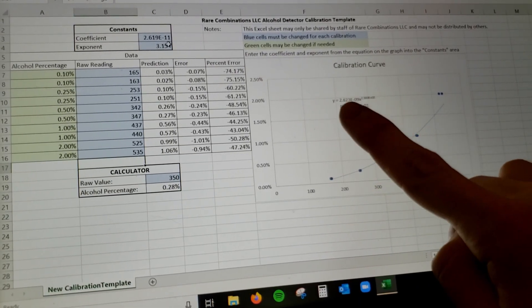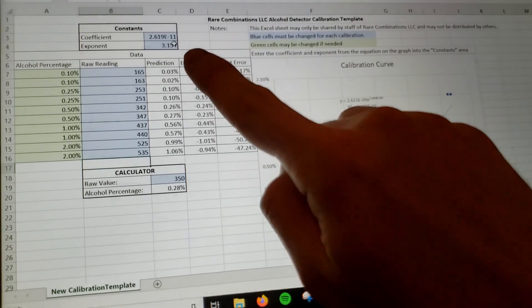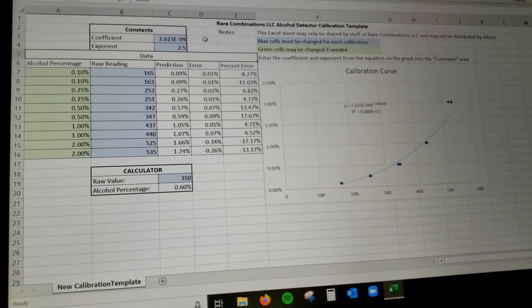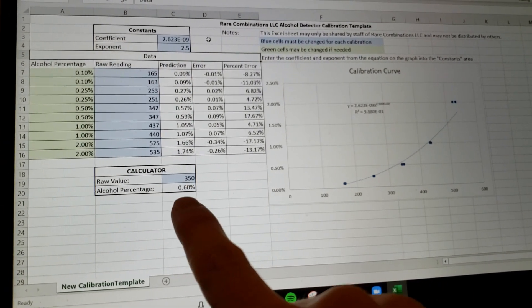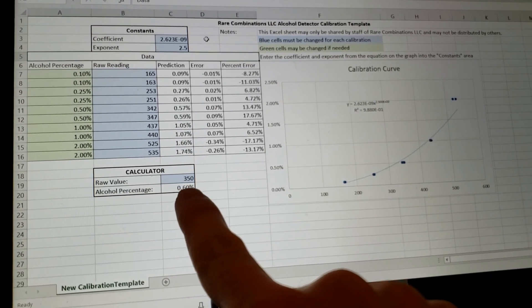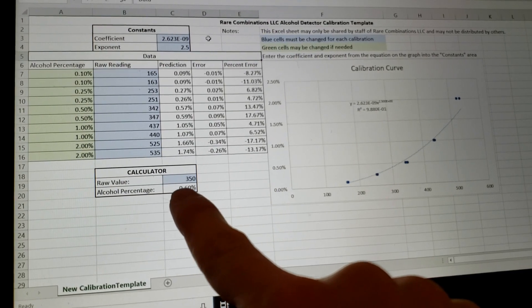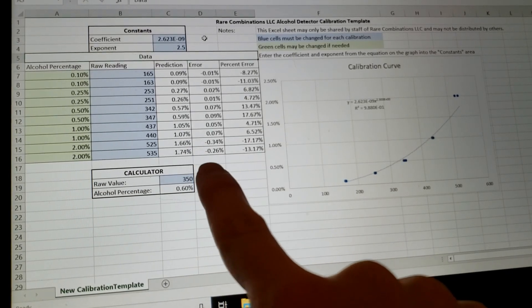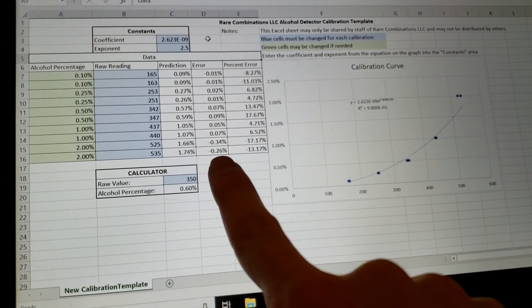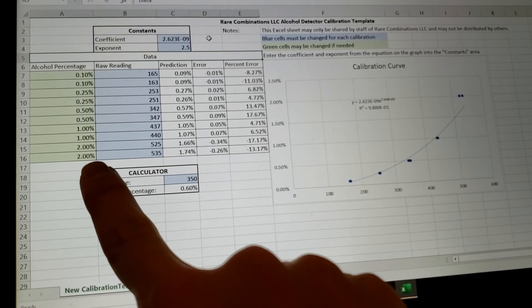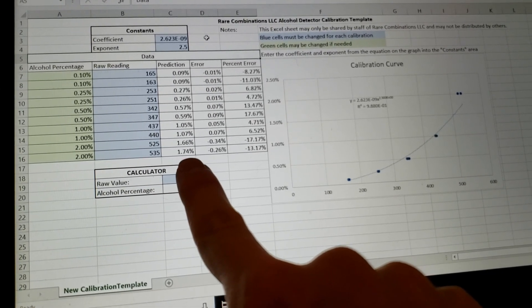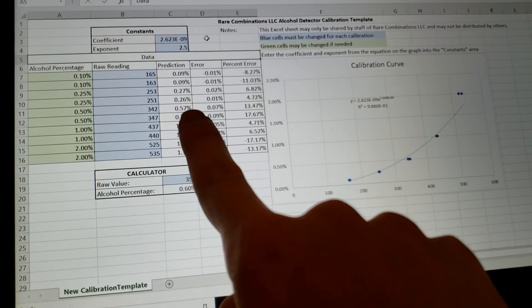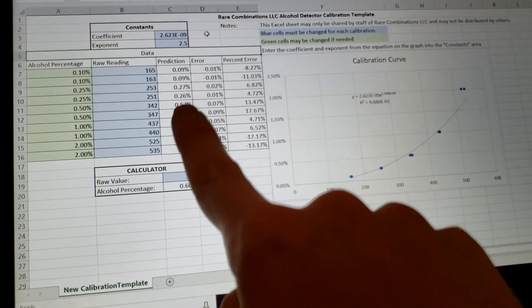So the next thing I'm going to do is take these constants in this equation and put them into the constants up here in this box. Now that the constants are plugged in, then this calculator down here works. Basically all you have to do is type in the raw reading that you get on the alcohol detector and then it gives you the alcohol percentage. You can also notice, remember like I said, in the 2% samples it's reading a little bit low, so those 2% samples were actually reading 1.7-ish. But all of the other samples are pretty accurate. The 0.5 was reading 0.57 and the 0.25 was reading 0.26. The 0.1 was reading 0.09. The 1% was reading 1.05%. So you can see all of it's pretty accurate.